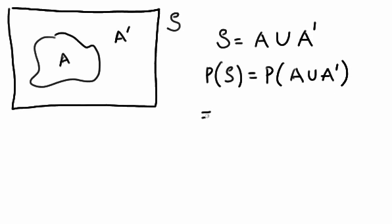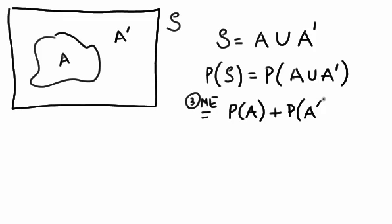Now we know by the third axiom of probability, the mutually exclusive axiom, which tells us that since A and A complement are mutually exclusive, we can add those individual probabilities together: the probability of A plus the probability of A complement.